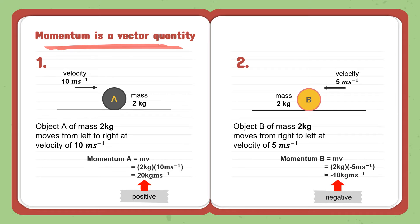Don't worry — it is actually caused by the direction of motion of the object. As you can see, object A moves from left to right, making its momentum positive, and object P moves from right to left, making its momentum negative. The negative sign indicates the opposing direction of motion of the objects.